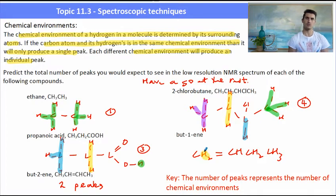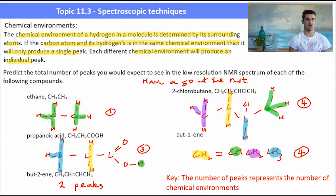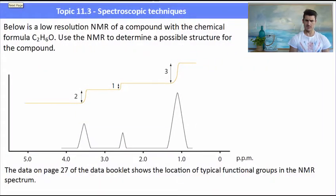Bute-1-ene, well bute-1-ene has the CH2 at the end with the double bond. We have a CH which is different and then we have a CH2 that doesn't have a connection to a double bond and then the CH3 at the end. So that will have four chemical environments as well. The number of chemical environments is the number of peaks in the structure, in the spectrum.